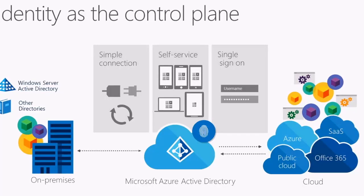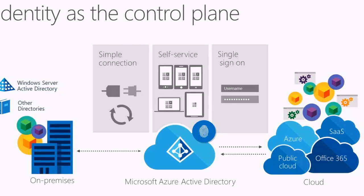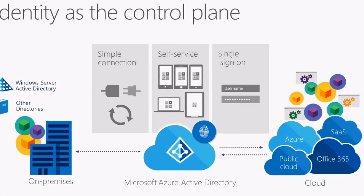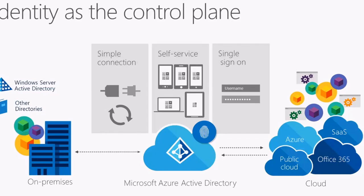On the left, you have your traditional Windows Server Active Directory environment on-premise. On the right, you have all external applications in the software-as-a-service model, and potentially third-party applications on-premise as well. Utilizing Microsoft Azure Active Directory as the integration hub provides single sign-on to those third-party hosted applications, as well as a self-service password reset portal.